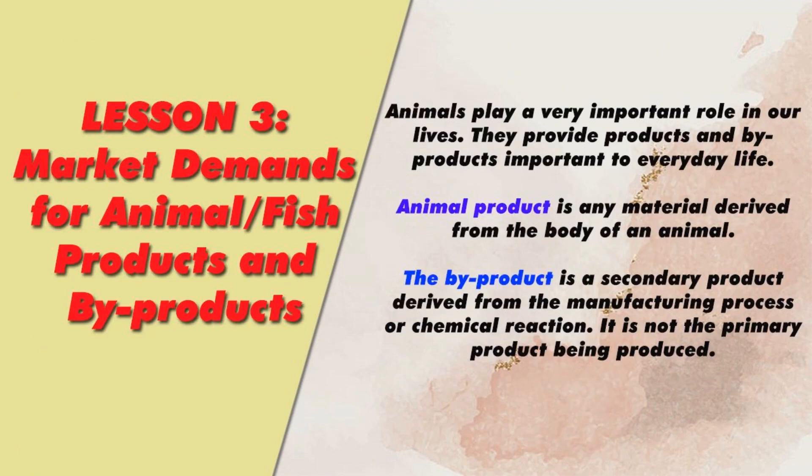Market demands for animal and fish products and byproducts. Animals play a very important role in our lives. They provide products and byproducts important to everyday life. An animal product is any material derived from the body of an animal. A byproduct is a secondary product derived from the manufacturing process or chemical reaction — it is not the primary product being produced.